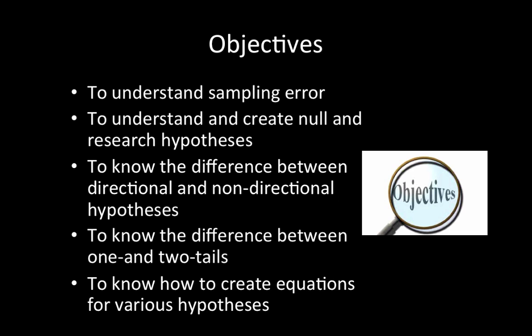Our objectives for this chapter are to understand sampling error, create null and research hypotheses (also known as alternative hypotheses), know the difference between directional and non-directional research hypotheses, understand one versus two-tailed tests, and create equations for various hypotheses.